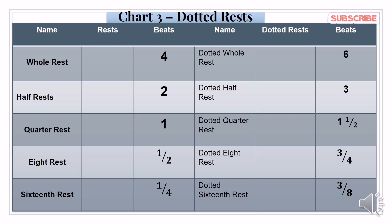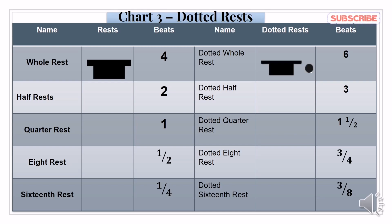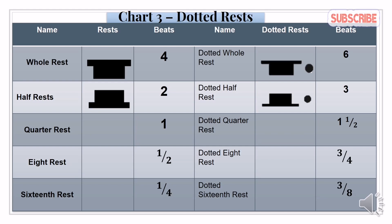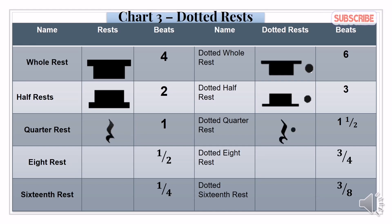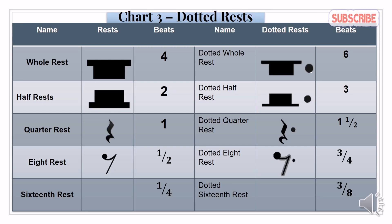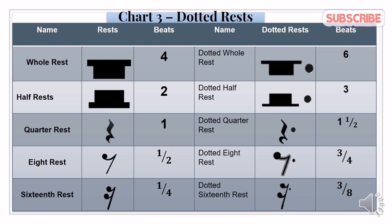Dotted rest values: whole rest has 4 beats, dotted whole rest has 6 beats. Half rest has 2 beats, dotted half rest has 3 beats. Quarter rest has 1 beat, dotted quarter rest has 1 and a half beats. Eighth rest has a half beat, dotted eighth rest has 3/4 beat. Sixteenth rest has 1/4 beat, dotted sixteenth rest has 3/8 beats.